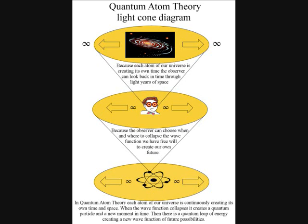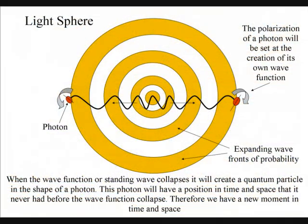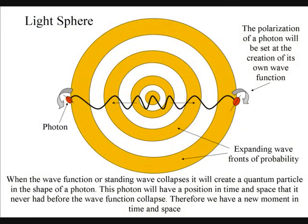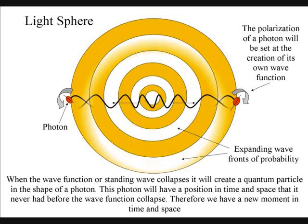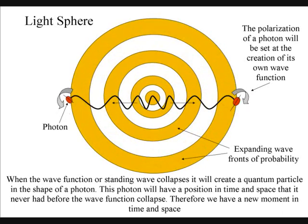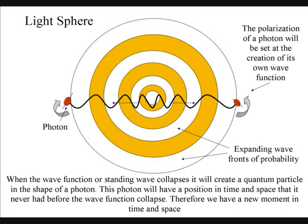The probability of the uncertainty principle is the same probability that the observer will have in any future event. The polarisation of a photon will be set at the creation of its own standing wave function. This will remain the same however large the light sphere becomes, because when the wave function collapses, it will represent the same moment in time for both photons.